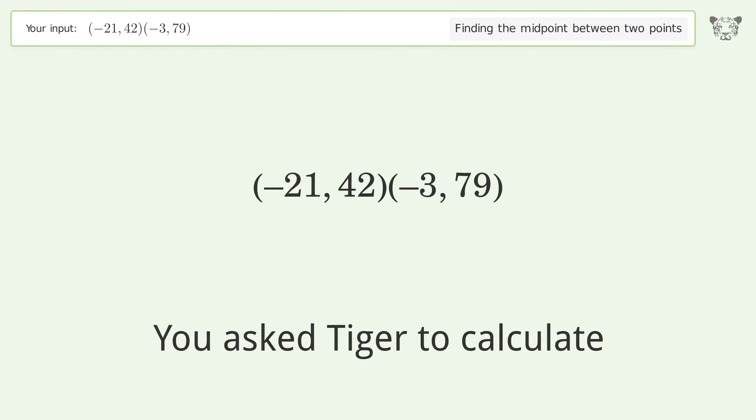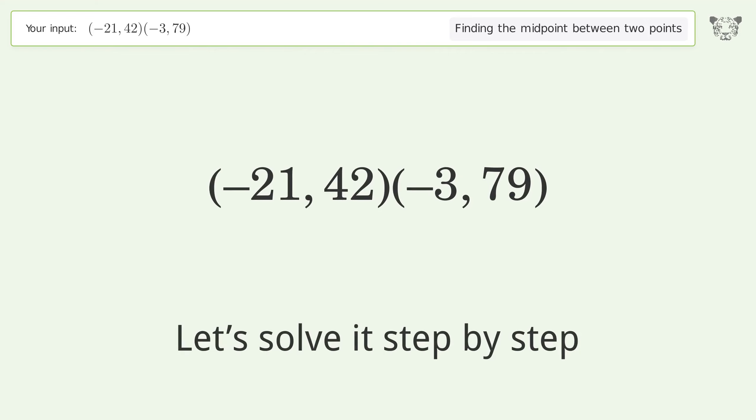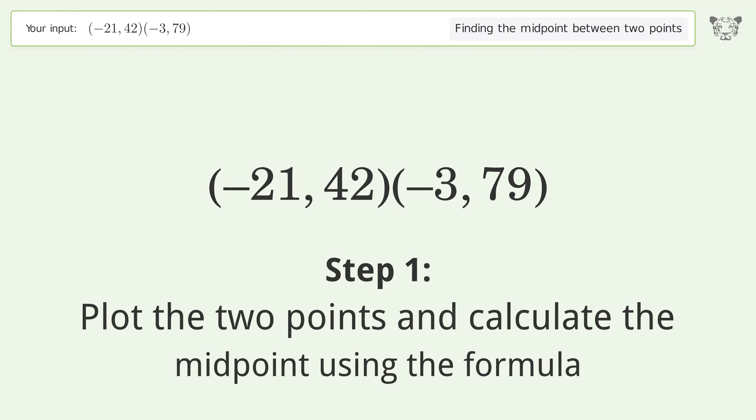You asked Tiger to calculate this. This deals with finding the midpoint between two points. The midpoint between the two points is negative 12, 60.5. Let's solve it step by step. Plot the two points and calculate the midpoint using the formula.